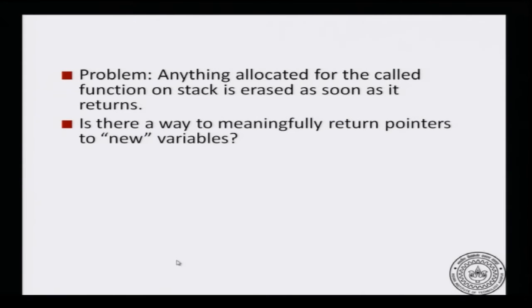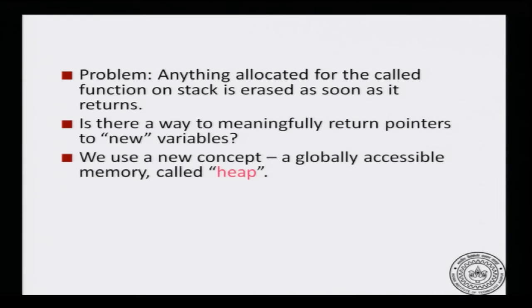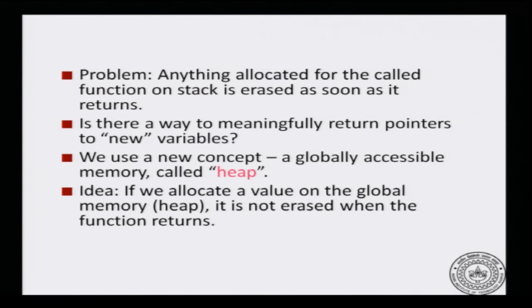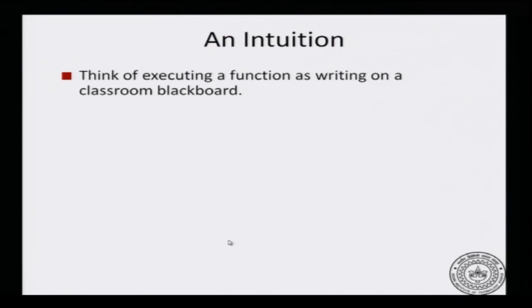The main problem is that anything allocated to the called function on the stack is erased as soon as it returns. Is there any way to meaningfully return pointers to new variables? We will use a new concept: a globally accessible memory called the heap. We have already seen a stack; now we will understand what a heap is. Roughly, if we allocate a value on the global memory it is not erased when the function returns. I will explain this with the help of a broad analogy.